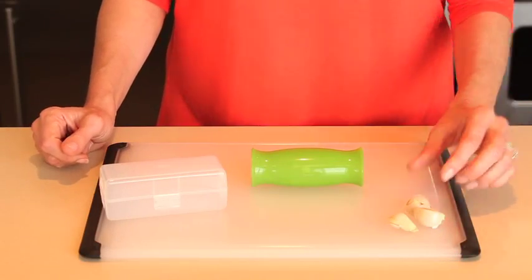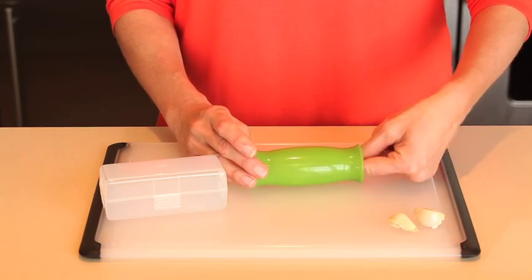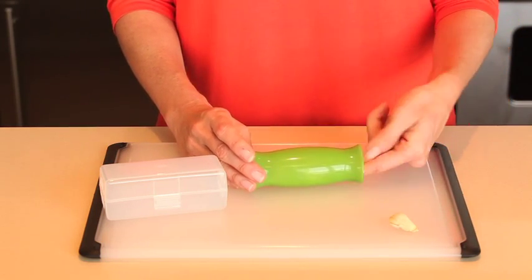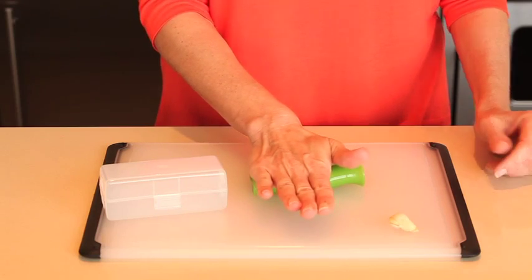To use the OXO Garlic Peeler, simply insert garlic cloves into the green silicone peeler and roll it back and forth on the countertop while pressing downward.